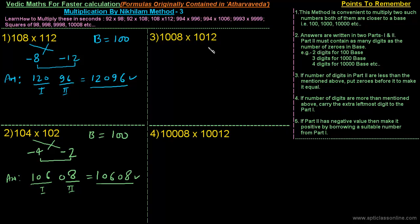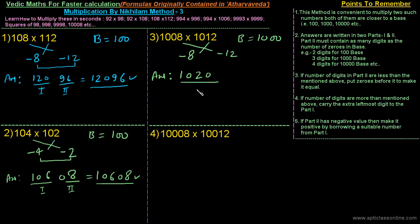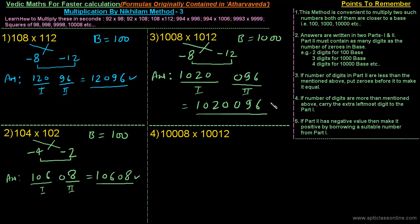In the third example, for the multiplication of 1008 × 1012, the base is 1000 because both numbers are closer to 1000. The difference between the base and 1008 is minus 8, and for 1012 it is minus 12. The first part is the difference of 1008 and minus 12, which is 1020. The second part is minus 8 × minus 12, which is 96. This part must contain 3 digits, so we add one zero before it, giving the final answer 1020096.